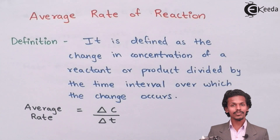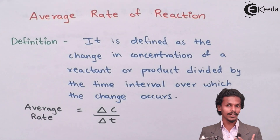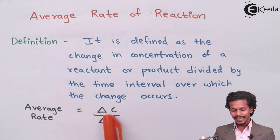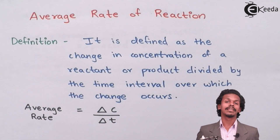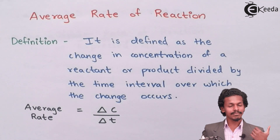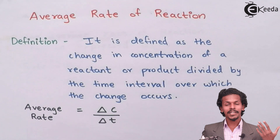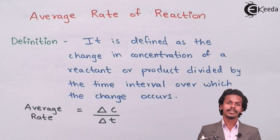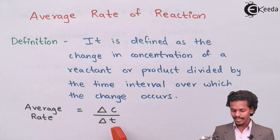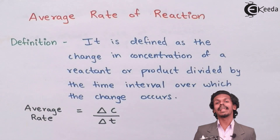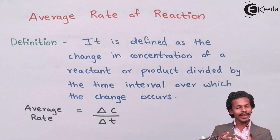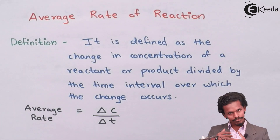The decrease in concentration within that interval of time is what we measure as the average rate of reaction. The average rate of reaction is delta C divided by delta T, where delta C is the difference between the initial and final concentration, and delta T is the time interval.